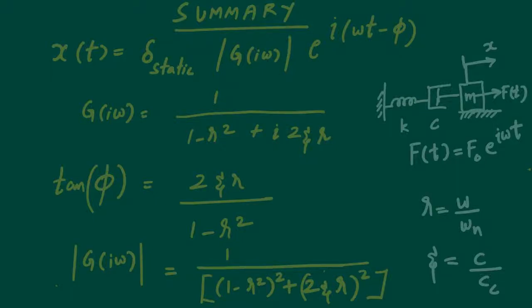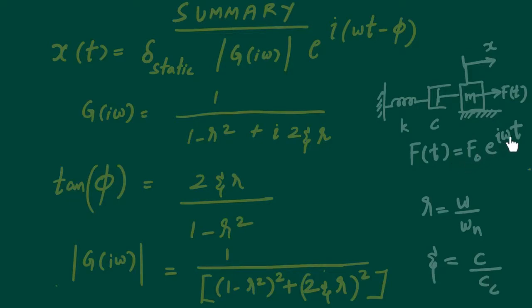Good morning friends. In this segment I'm planning to summarize whatever we have discussed so far. We started off talking about a single degree of freedom viscously damped system in which there is a harmonic excitation acting. Since there is a harmonic excitation, it is always beneficial to use complex exponential notation to make the calculations a bit easier. We then assumed that the response will also behave with the frequency of omega, where omega is the forcing frequency.